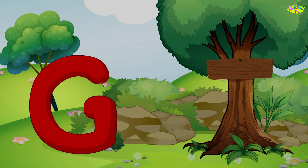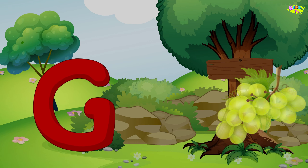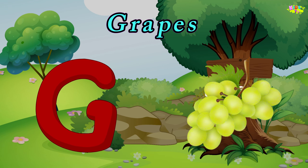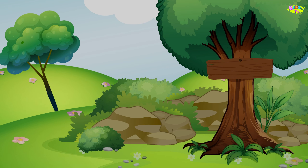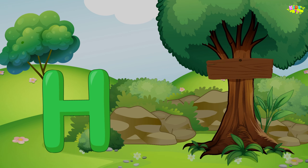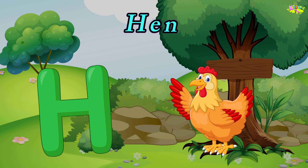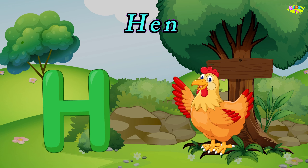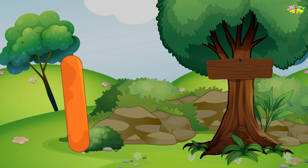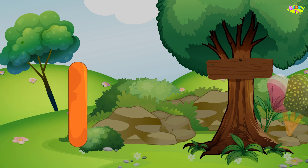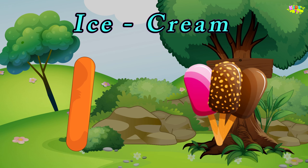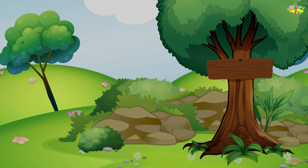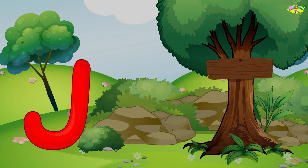G is for grapes. K-k-k-grapes, k-k-grapes. G, grapes. H is for hen. H-h-hen, h-h-hen, h-h-hen. I is for ice cream. A, A, ice cream. A, A, ice cream. I, ice cream.